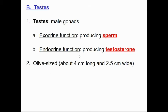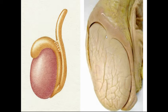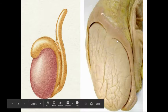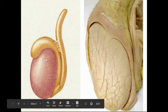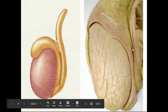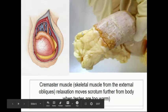A testicle is about the size of an olive. Here we see an actual testicle with all the skin and connective tissue removed, and here we see a diagram of it. This structure is the epididymis, which is going to lead to the vas deferens.